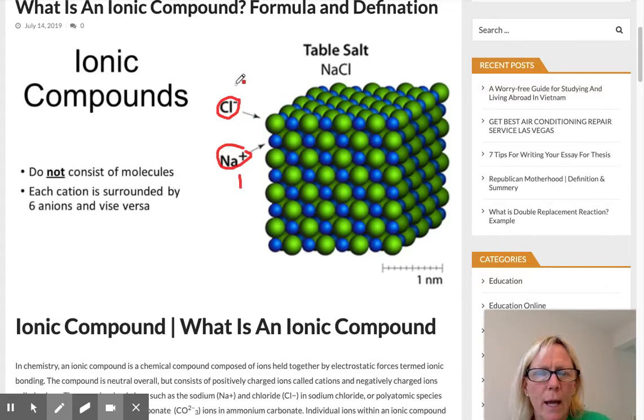Chlorine is in group 17, so it's going to gain one electron. When it gains one, it becomes 1- negative, and when sodium loses one, it becomes 1+ positive. These are known as anions for the negatively charged ion and cations for the positively charged ion.